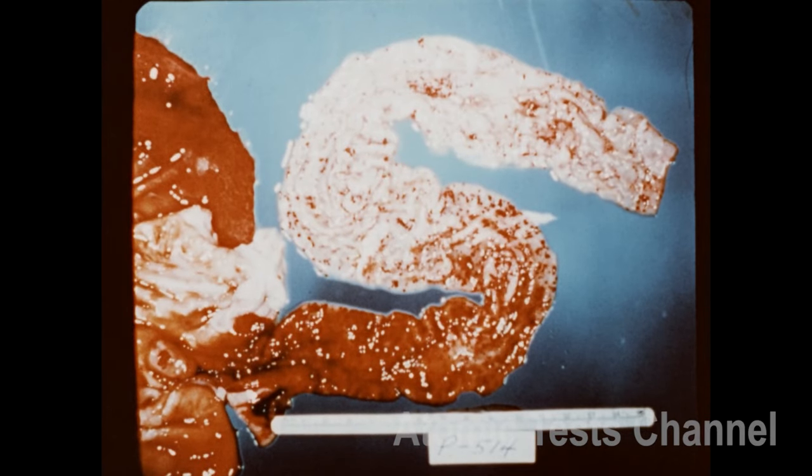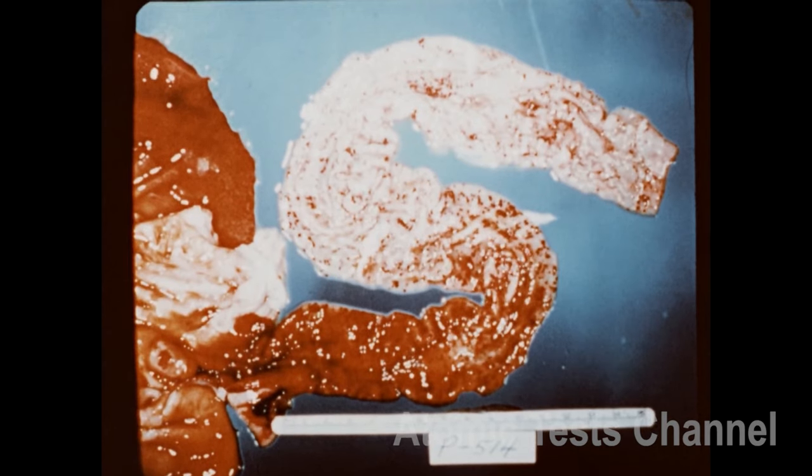More serious injury can be seen in the experimental animal exposed to lethal doses of radiation. This is the intestinal tract of one such animal, showing extensive hemorrhage. Similar injury can be expected in human victims of severe radiation exposure.